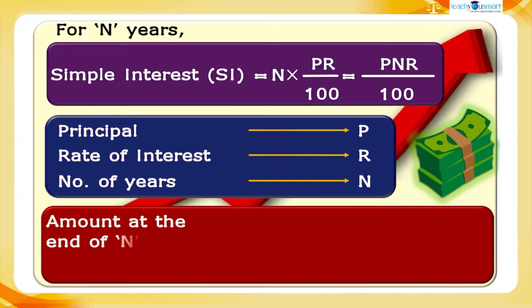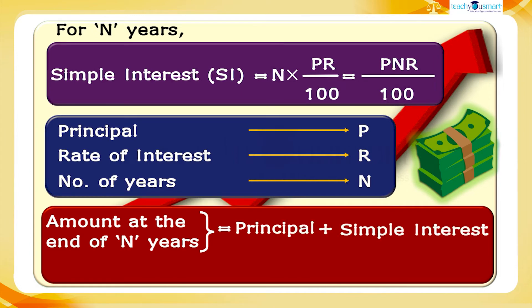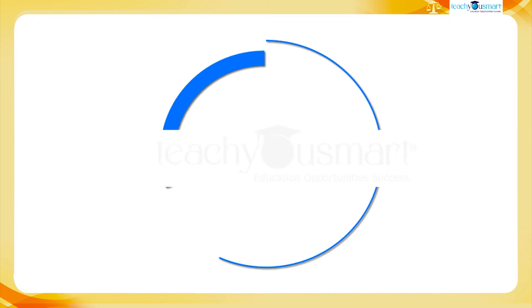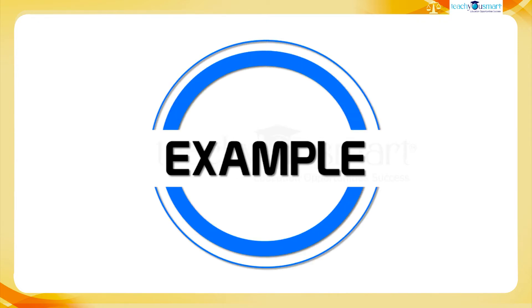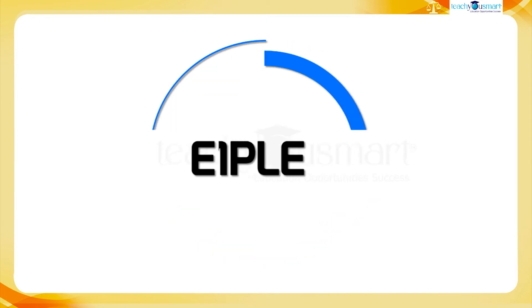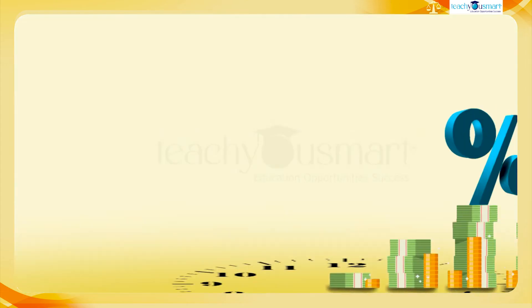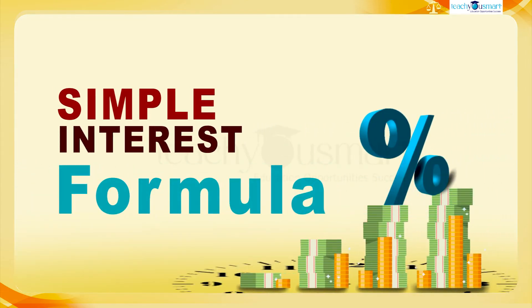The amount at the end of N years equals principal plus simple interest, that is A equals P plus SI. Let us do an example using the simple interest formula.